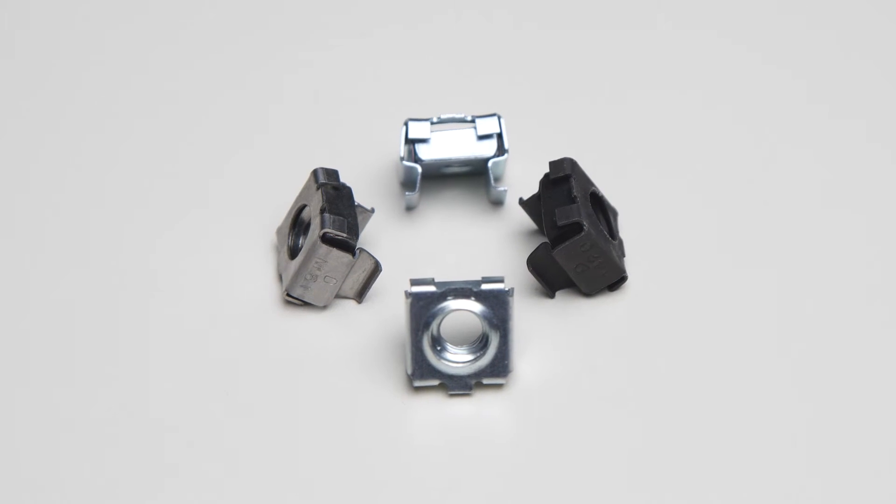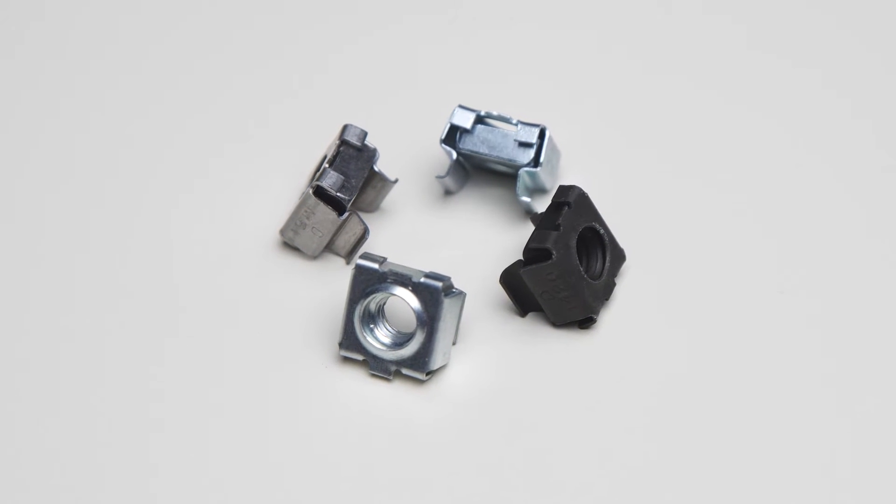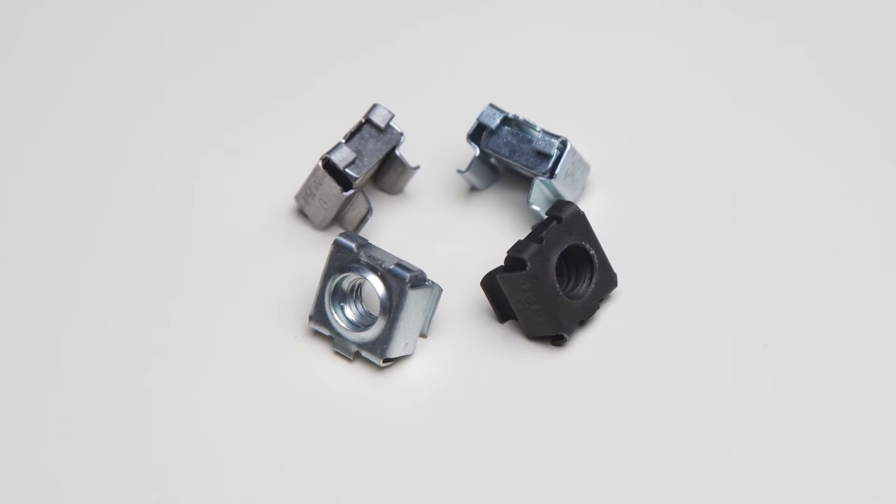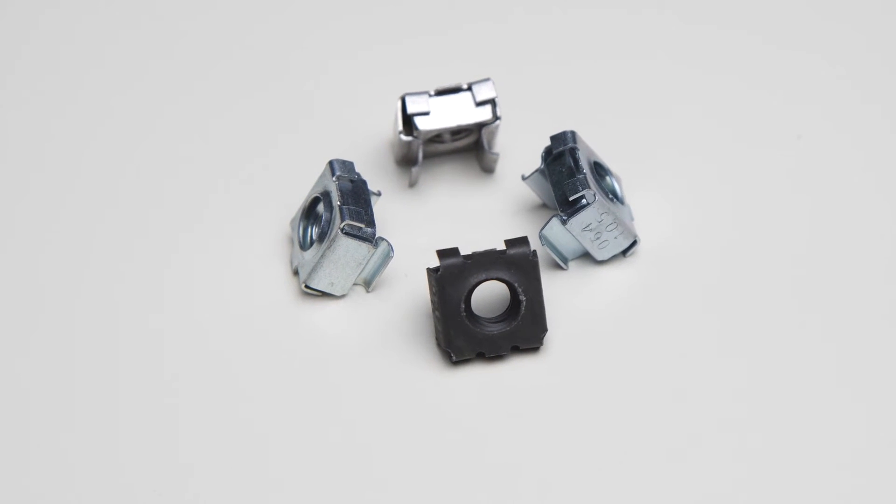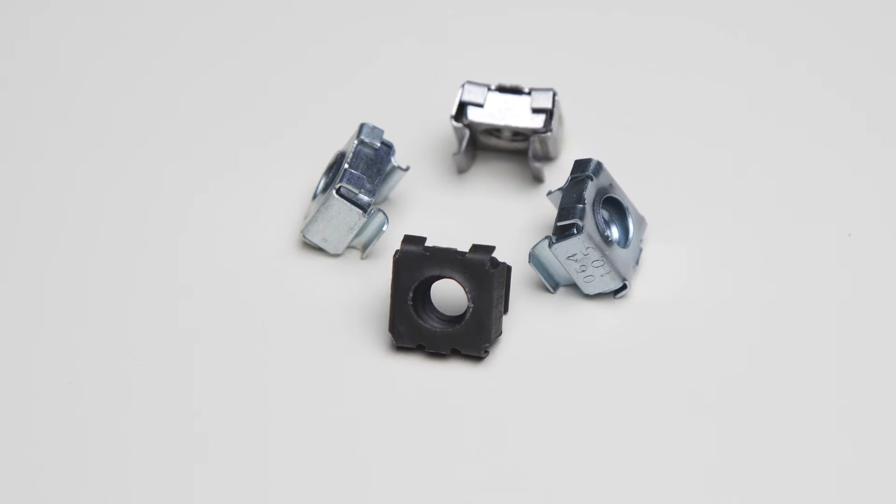SpeedGrip Cage Nuts are an assembly of a square nut and spring steel cage. They are used in a diverse range of industries and applications, and are available in three basic cage sizes, accommodating several nut sizes.